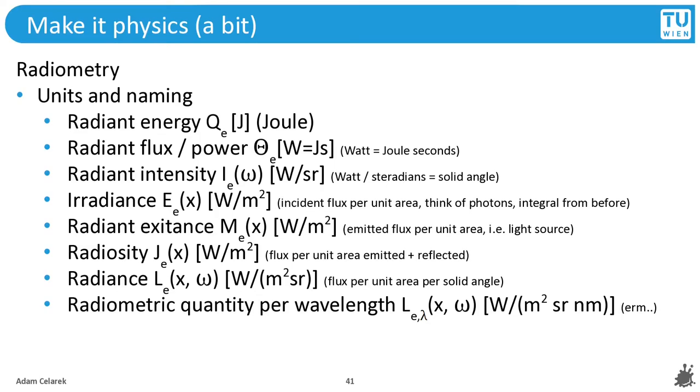The flux or the power is how much rain or water is there in total in a given time. Radiant intensity: how much water falls into a certain direction, you see the radiance or the solid angle. Then irradiance: how much water falls on a given area. Then radiant exitance: how much water is coming out of the cloud per square meter. Then radiosity: imagine the rain is flying up into the clouds, being reflected by the clouds, and the clouds add some rain. Then radiance: it is the same but per direction and per area. And finally, radiometric quantity per wavelength.